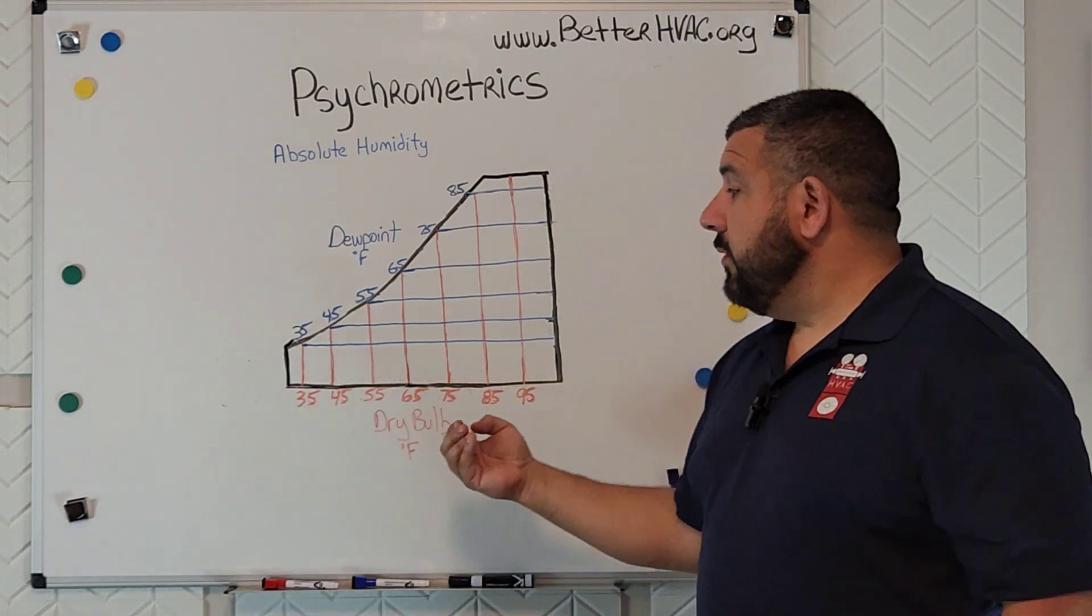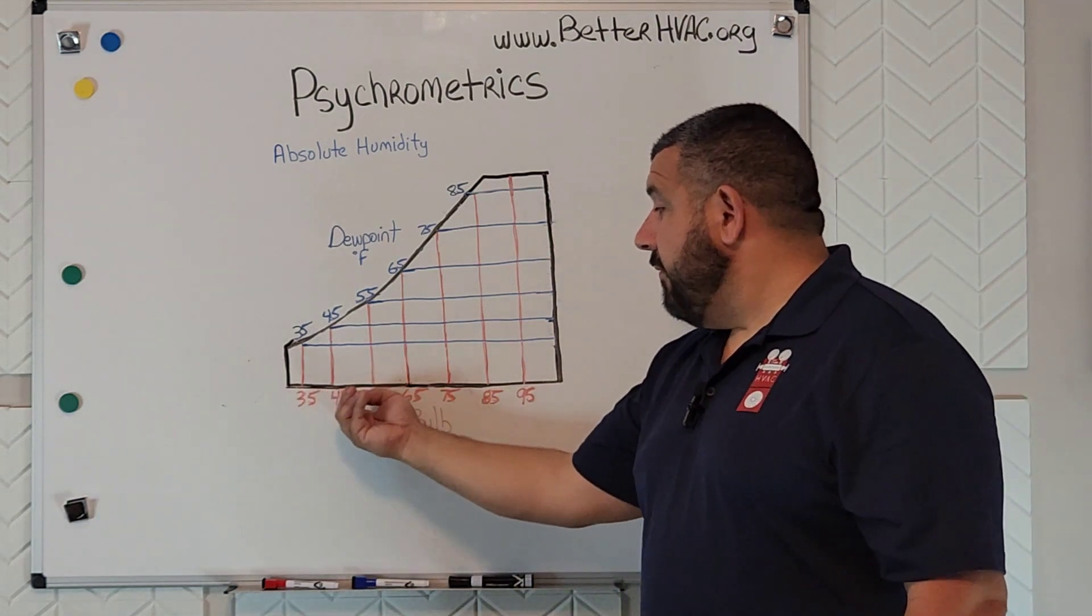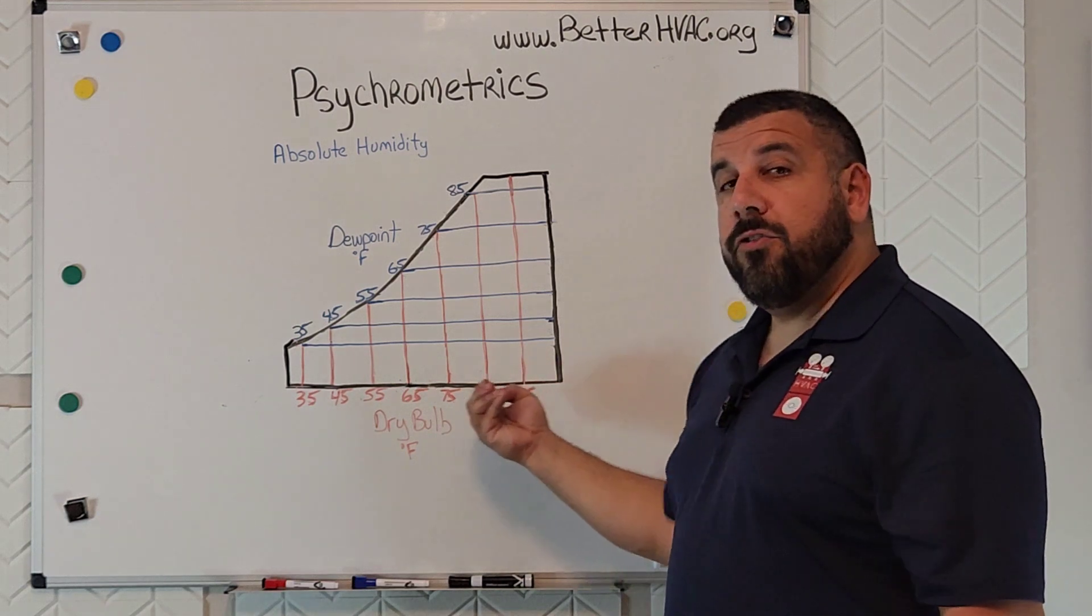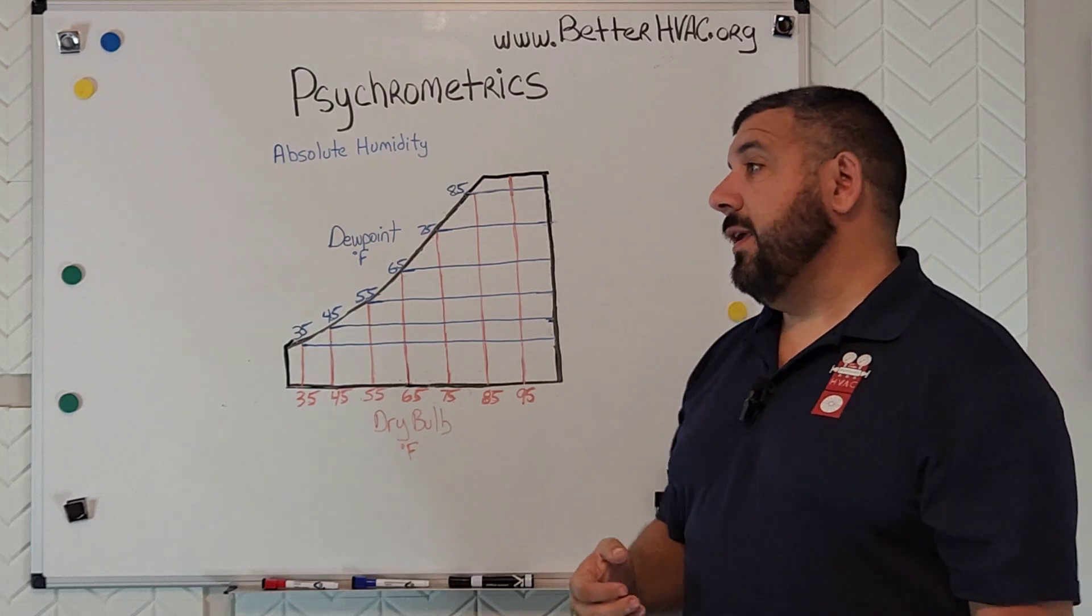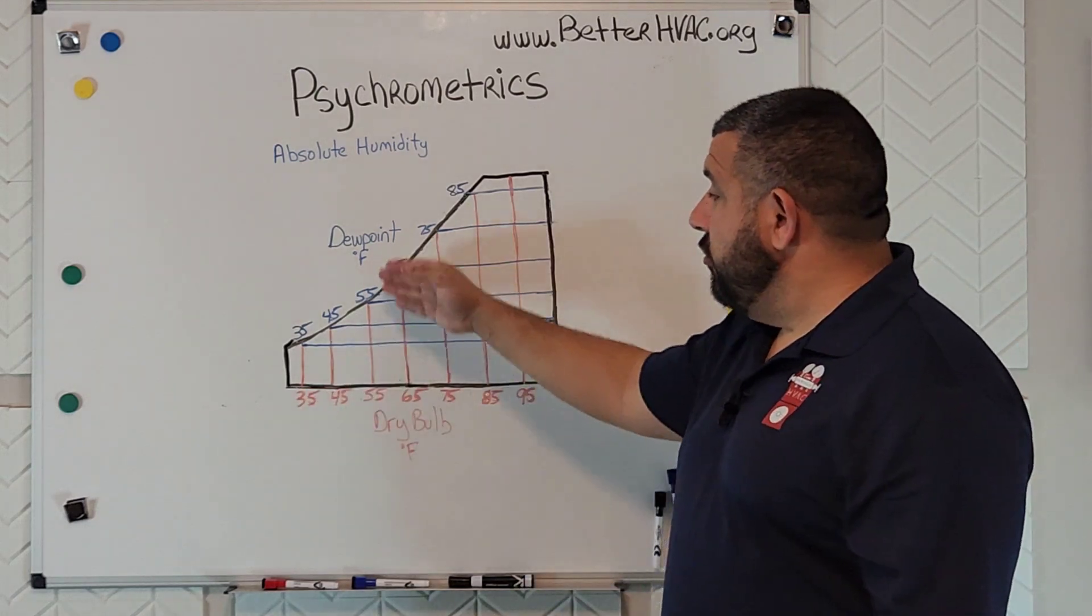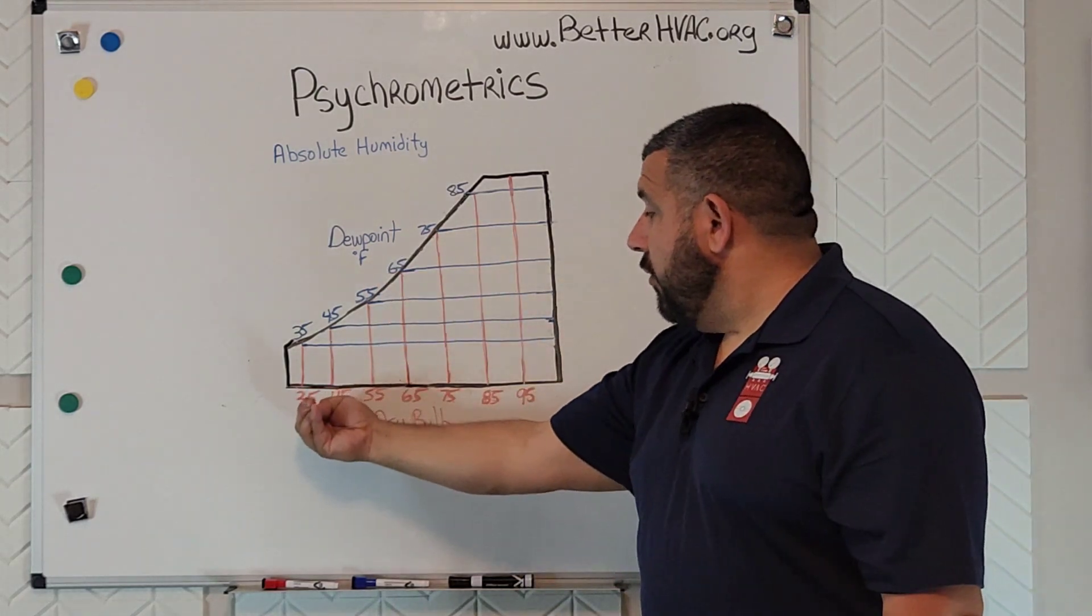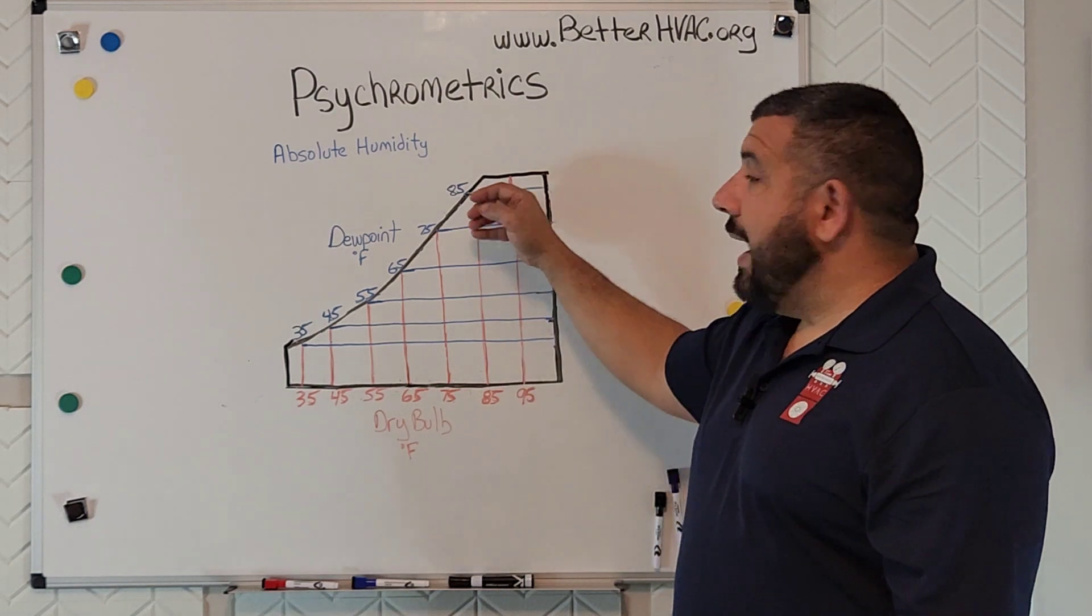Going back to what we talked about a few weeks ago with dry bulb temperature, the farther to the right that we are in the chart, the more heat is in the air. And then the higher up in the chart, the more moisture is in the air. And that's where we get these two properties here. We've got our dry bulb temperature, and then we have our moisture.